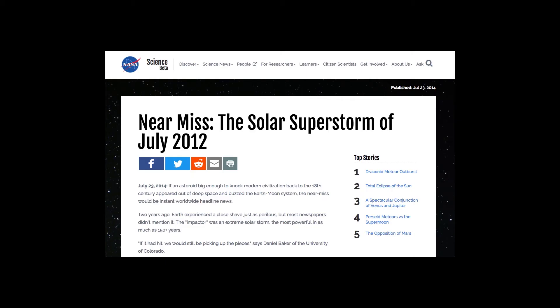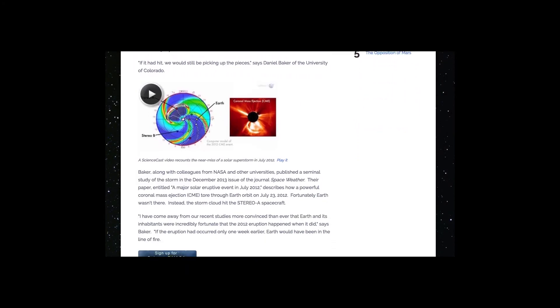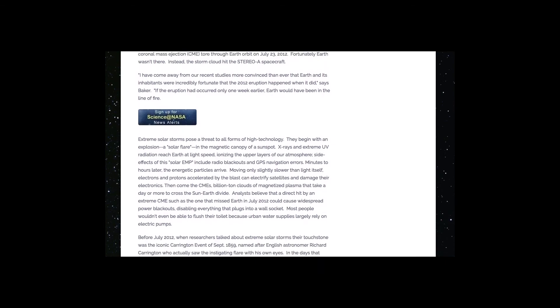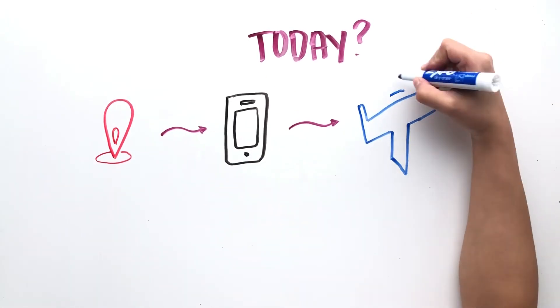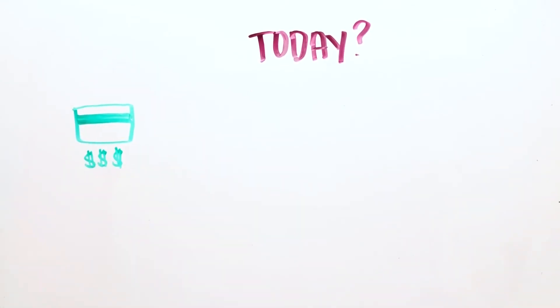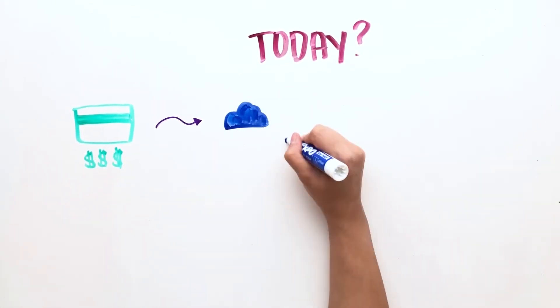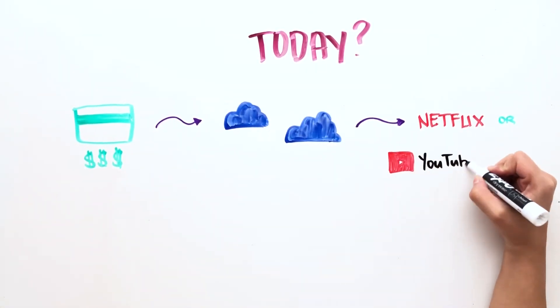In July 2012, a CME almost as powerful narrowly missed the Earth. Had the storm occurred a week before, the blast site would have been facing the Earth. If a solar storm were to occur today, it would knock down the global positioning systems on our cell phones, airplanes, cars, and many of our satellites. Every time you buy anything with your credit card, it's a satellite transaction. Every time you check the weather on your phone app or stream a video on Netflix or YouTube, it uses satellite communications.